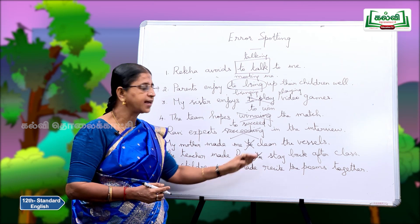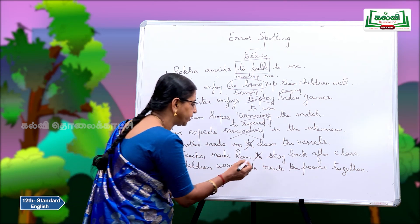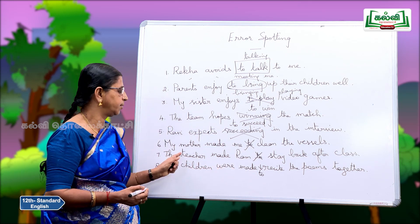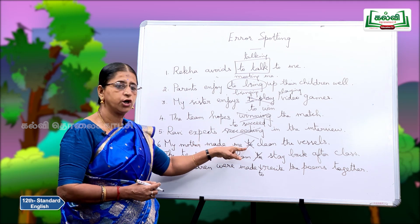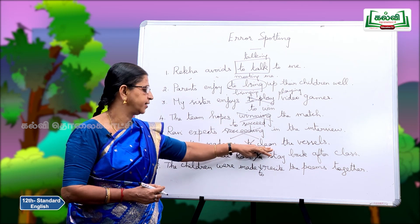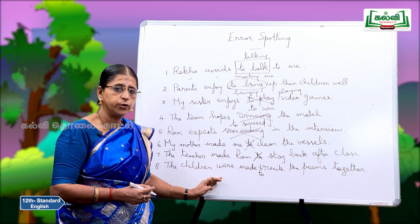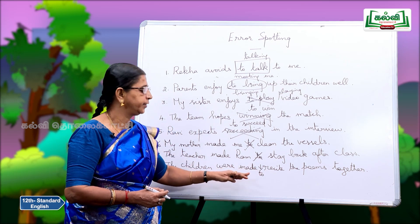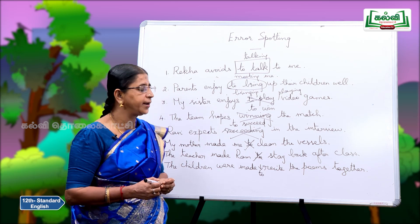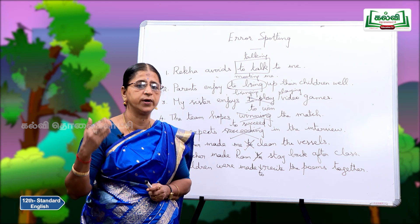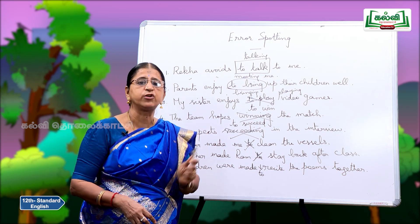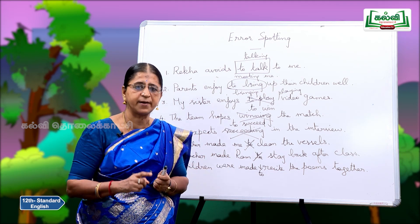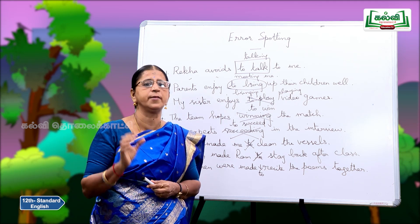The children were made recite the poems together — here it is in the passive, so you have to have 'to.' The children were made to recite the poems together. In the active voice, when you use 'made,' you use only the bare infinitive. But in the passive form, you must use the to-infinitive. The children were made to recite. The servant was made to do the work again. Ram was made to stay back after class.